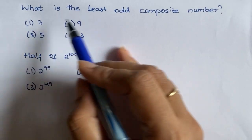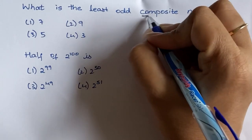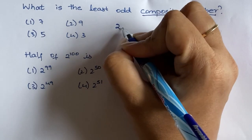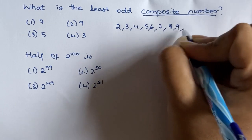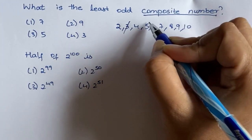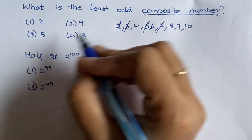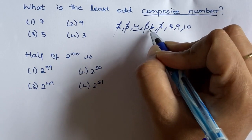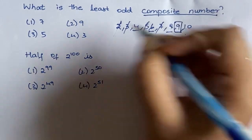What is the least odd composite number? A composite number is a number greater than 1 which is not prime. The prime numbers are 2, 3, 5, 7. The least odd composite number is 9, because 9 is odd and not prime. So the answer is 9 — second option.